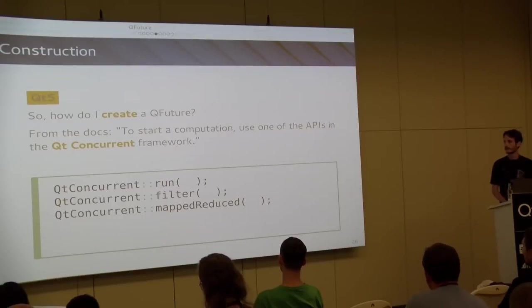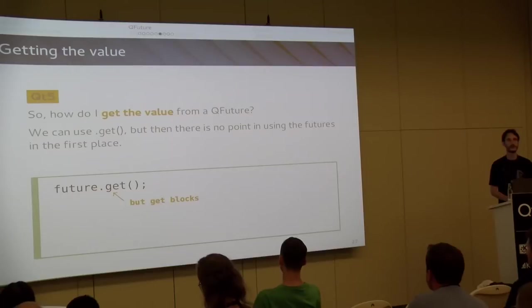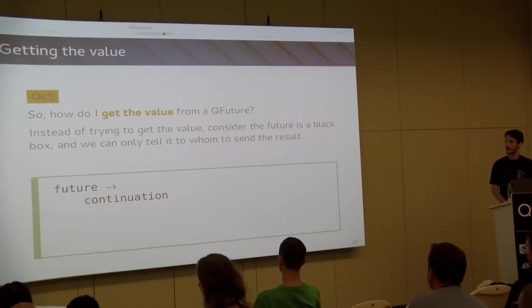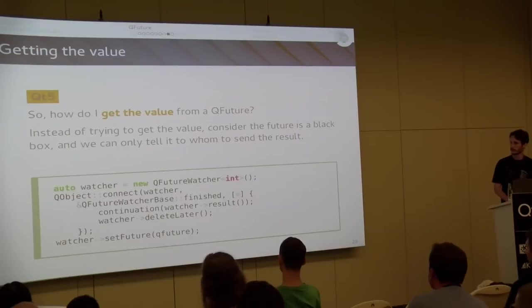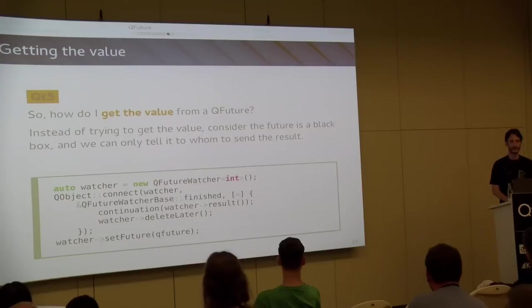How do you get the value? You can call .get, which we already said is a bad thing. Alternatively, if you want to chain a continuation to a future instead of calling .then - which we don't have in Qt - we need this code snippet, because QFuture is not meant to be used like this. It's meant for the fork-join pattern.